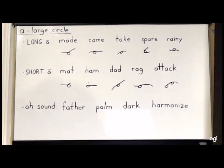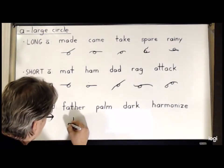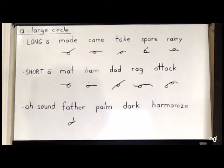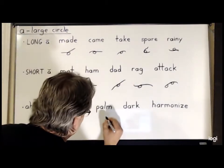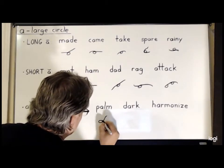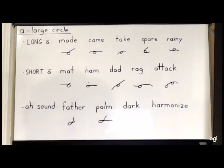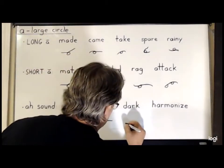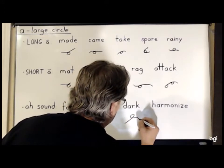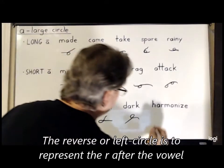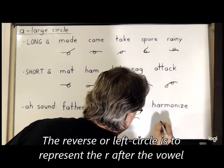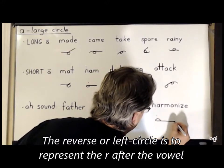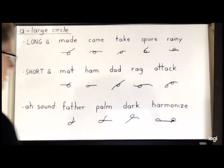And now the AH sound, where there is an A, like in 'father', 'palm', 'dark', and 'harmonized'. For 'father', we'll write the F, the A, and the T-H. For 'palm', we'll simply write P-A-M, because the L sound here is understood and rarely pronounced. The word 'dark' is D-A-R-K. And finally, 'harmonized', which is H, a reverse A, an M-N stroke, long I, and an S.